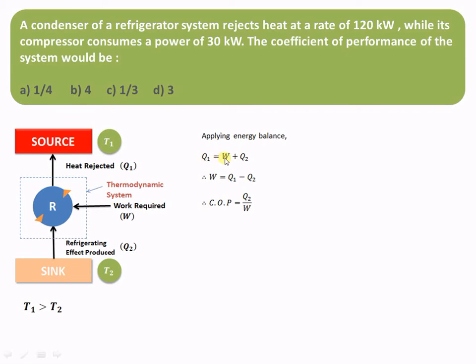The outgoing arrow is equal to the incoming arrows to the system, so heat rejected equals work required to drive the compressor plus the refrigerating effect produced. Therefore, work W is given by Q1 minus Q2, where Q1 is the heat rejected and Q2 is the refrigerating effect. The coefficient of performance of the refrigerator is given by output divided by input — that is, the refrigerating effect divided by the work required.